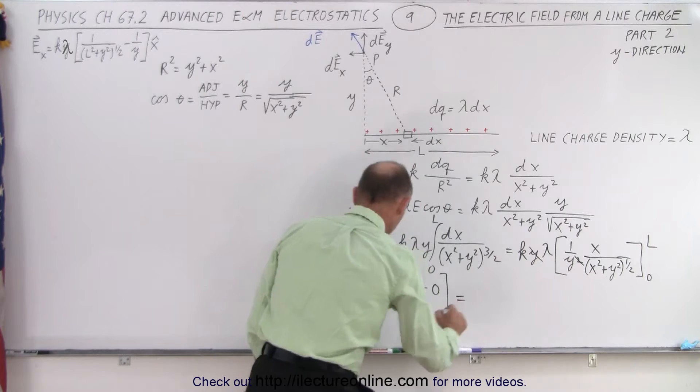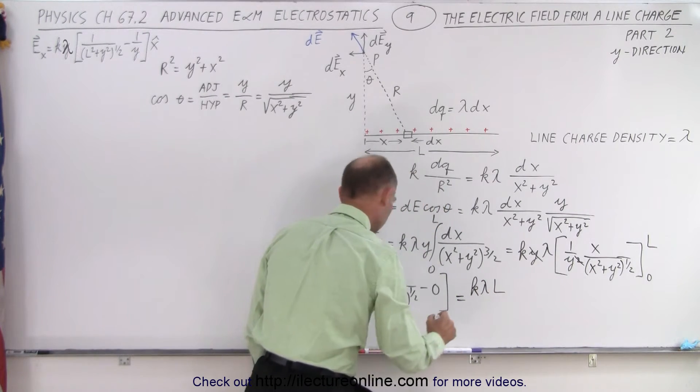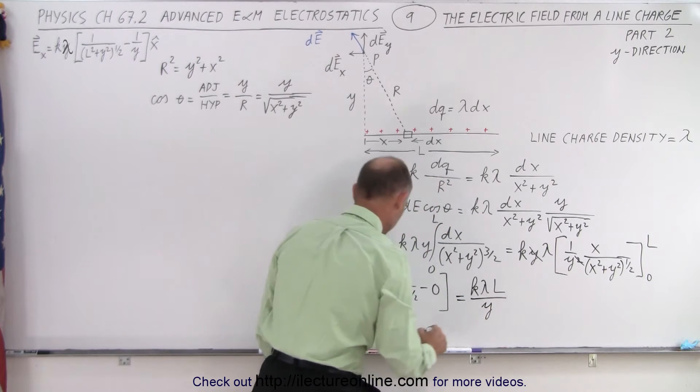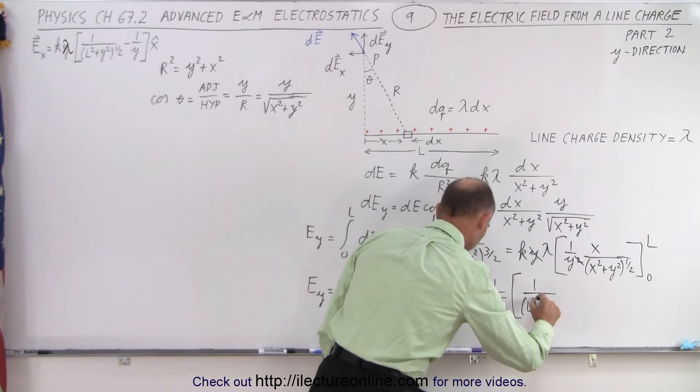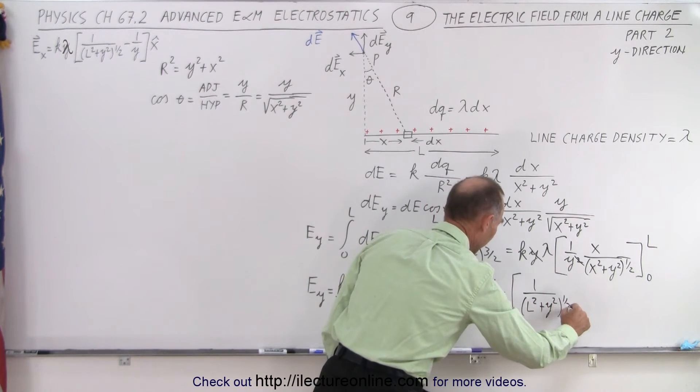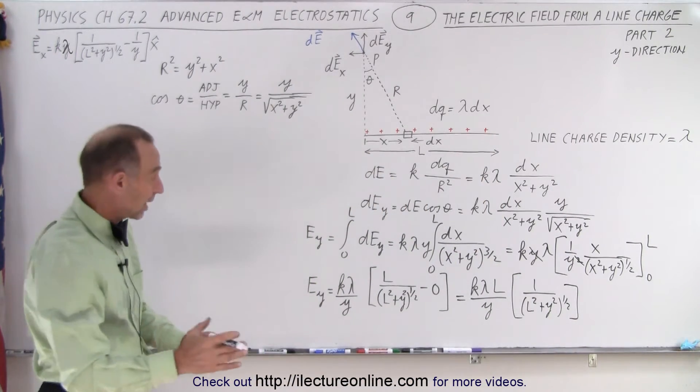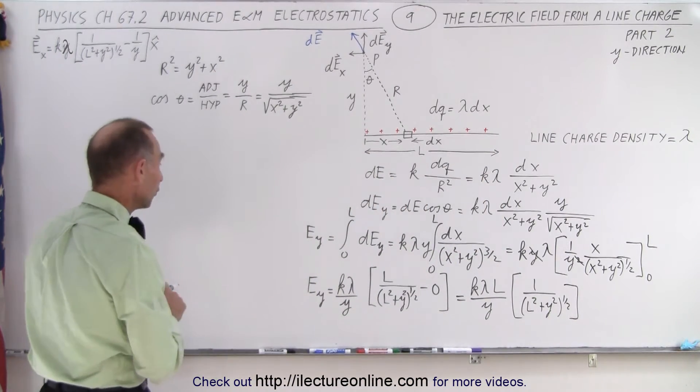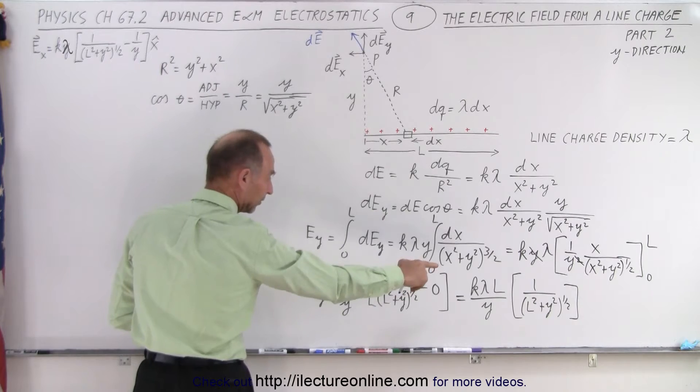And so then this can be written as k lambda L divided by y times the quantity 1 over L squared plus y squared to the 1 half power. Now we're ready to take that and plug that into our overall equation, because now we have E in the y direction. Or E in the y direction, that's equal to that. We have E in the x direction, so now we can write E.